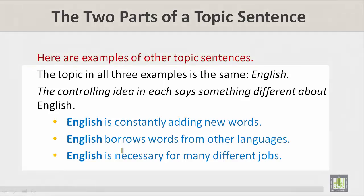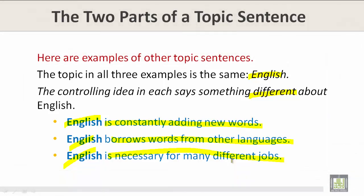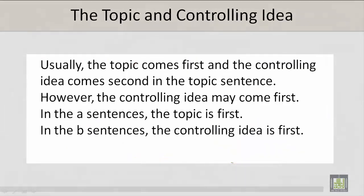The topic in all three examples is the same: English. The controlling idea in each says something different about English. For example: 'English is constantly adding new words' — topic and controlling idea. 'English borrows words from other languages' — topic and controlling idea. 'English is necessary for many different jobs' — topic and controlling idea. Usually the topic comes first and the controlling idea comes second in the topic sentence.